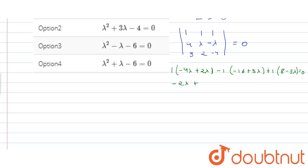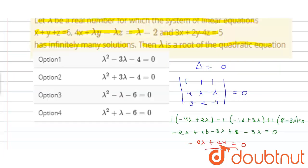Simplifying further: minus 2 lambda plus 16 minus 3 lambda plus 8 minus 3 lambda equals 0, which gives minus 8 lambda plus 24 equals 0, so lambda equals 3.